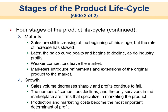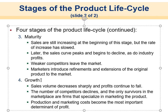In the maturity stage, sales are still increasing at first but start to slow — they increase at a decreasing rate, eventually peak, and then decline along with industry-wide profits. Weaker competitors leave the market. Marketers introduce refinements and extensions of the original product to try to extend the growth. The fourth stage — which is decline, not growth as was typed here — is where sales volume decreases sharply and profits continue to fall.